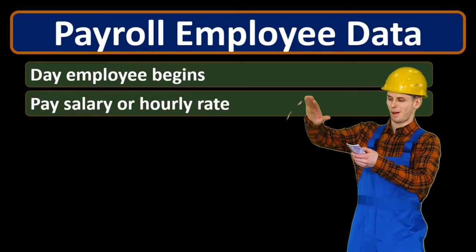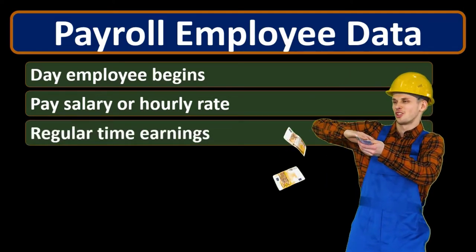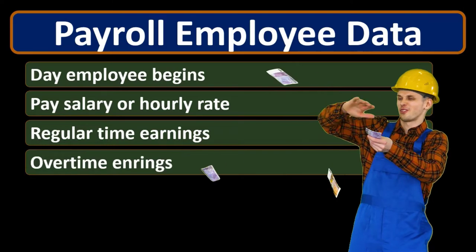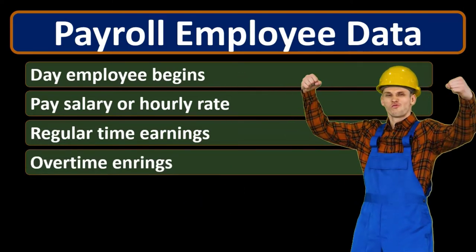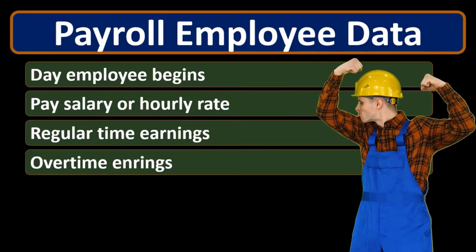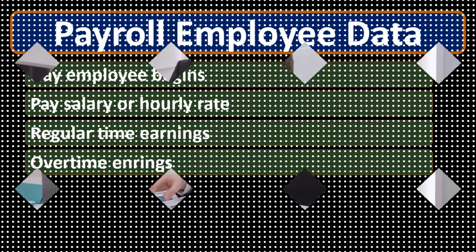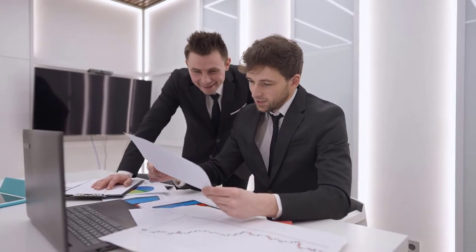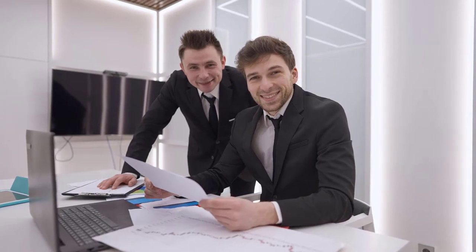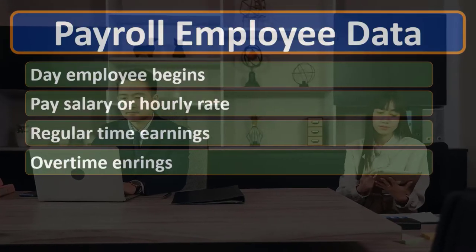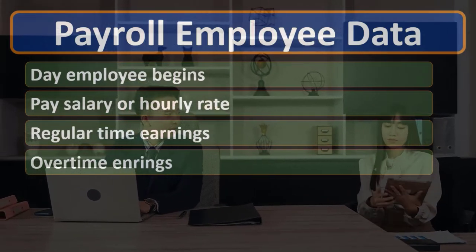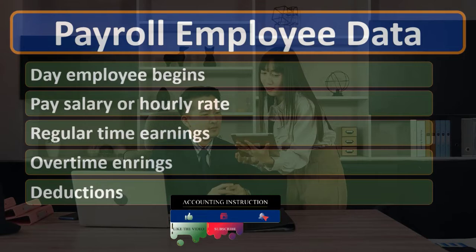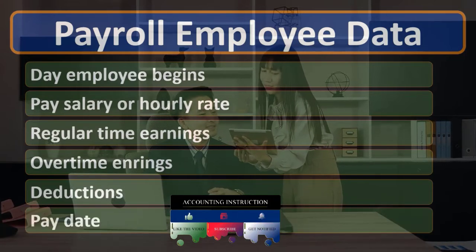We need to know if the employee is paid salary or hourly, and if hourly, what their hourly rate is. We need their regular time earnings and overtime earnings. There are laws about which types of employees are mandated to receive overtime pay — the company must maintain the minimum. If they're required to pay overtime, they must pay it, though they can choose to pay more to induce people to work overtime. There are laws and regulations dealing with overtime pay.